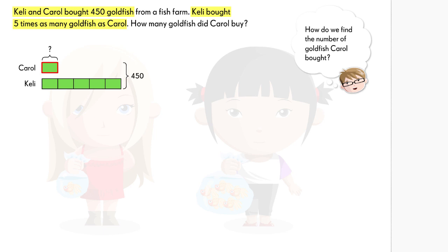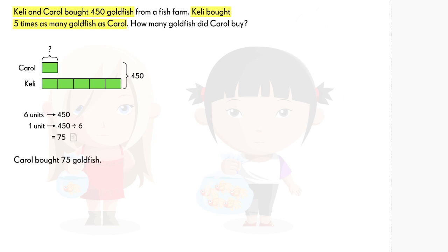If one rectangle represents one unit, the value of six units is 450. One unit represents 75. Therefore, Carol bought 75 goldfish.